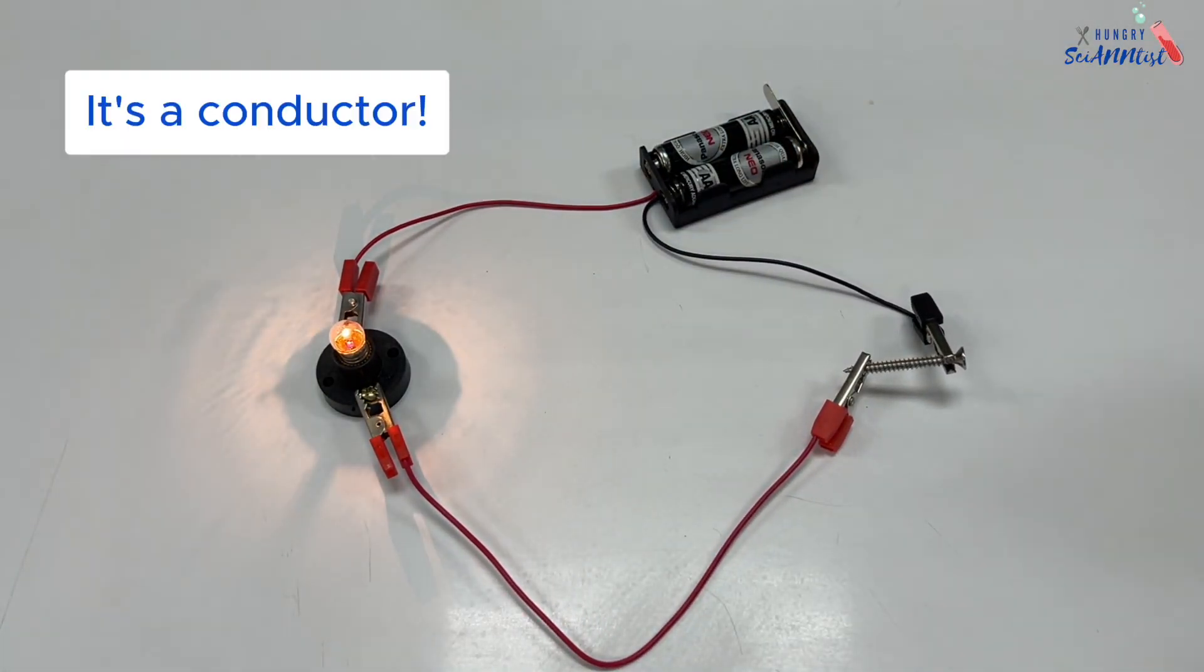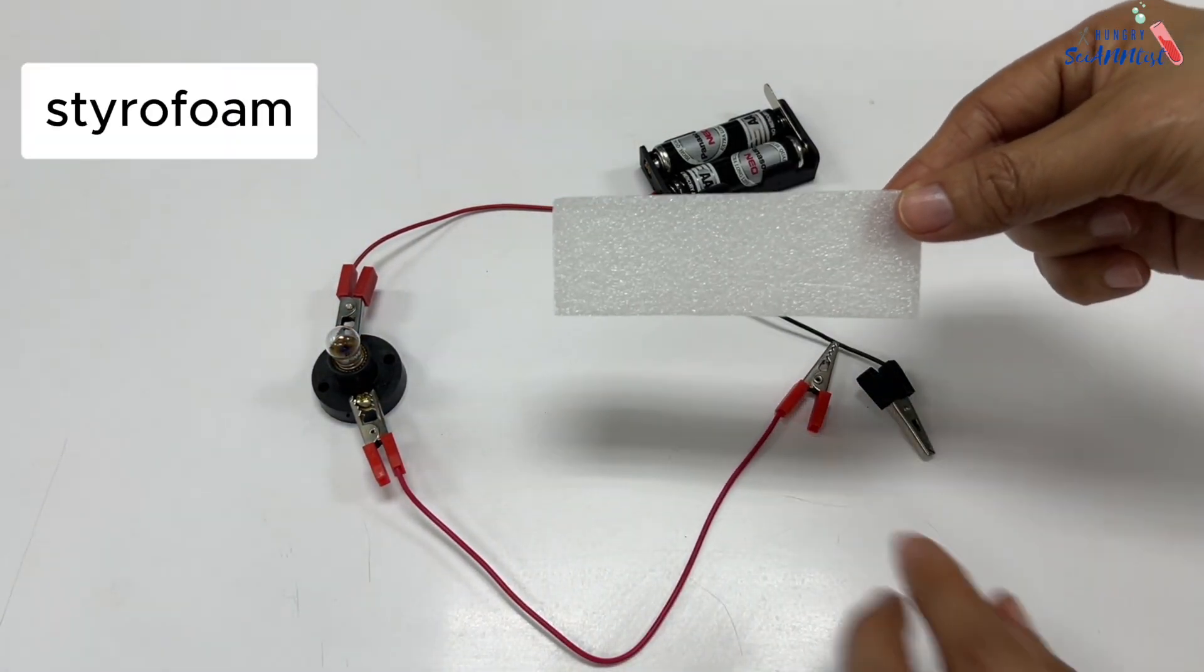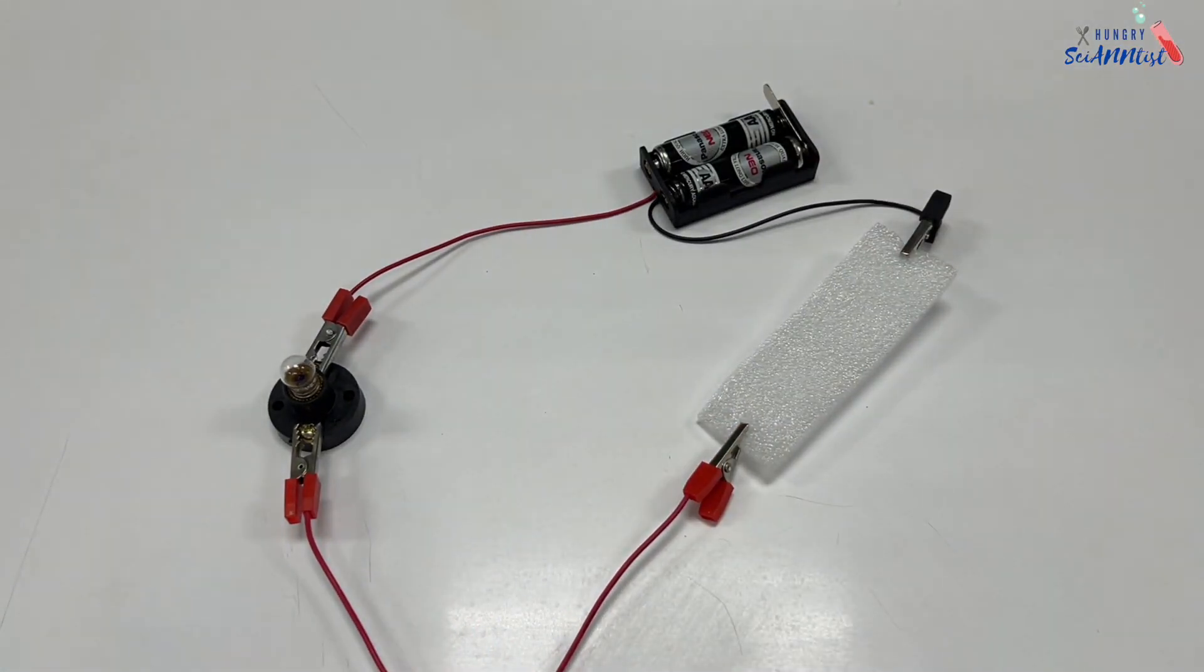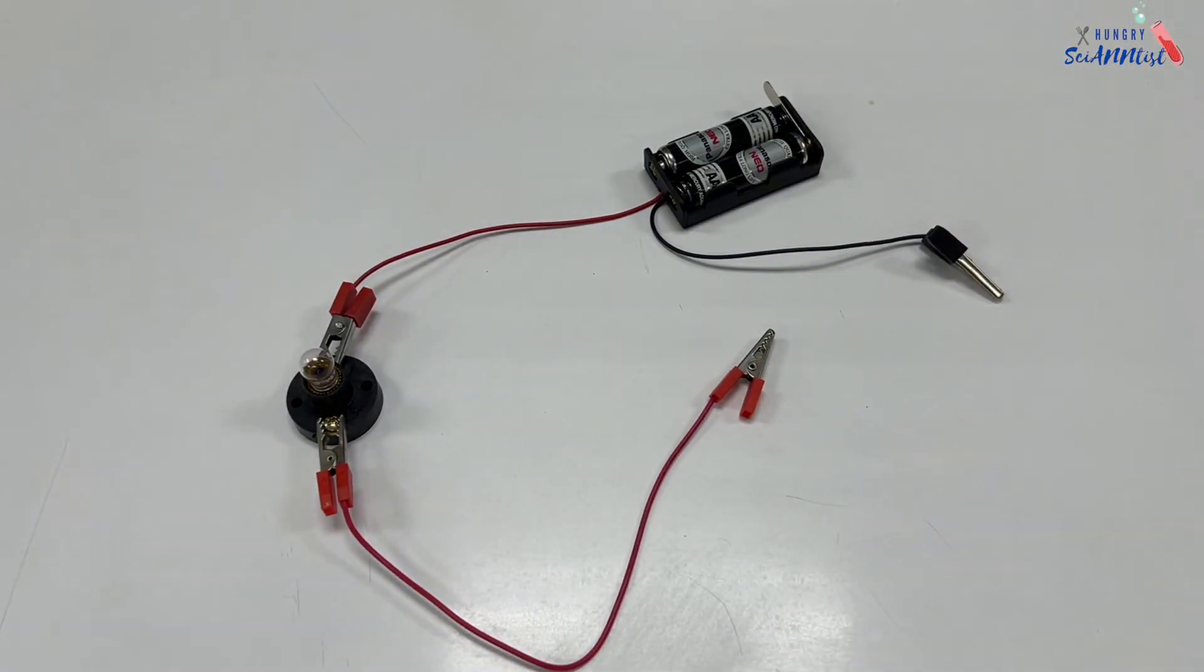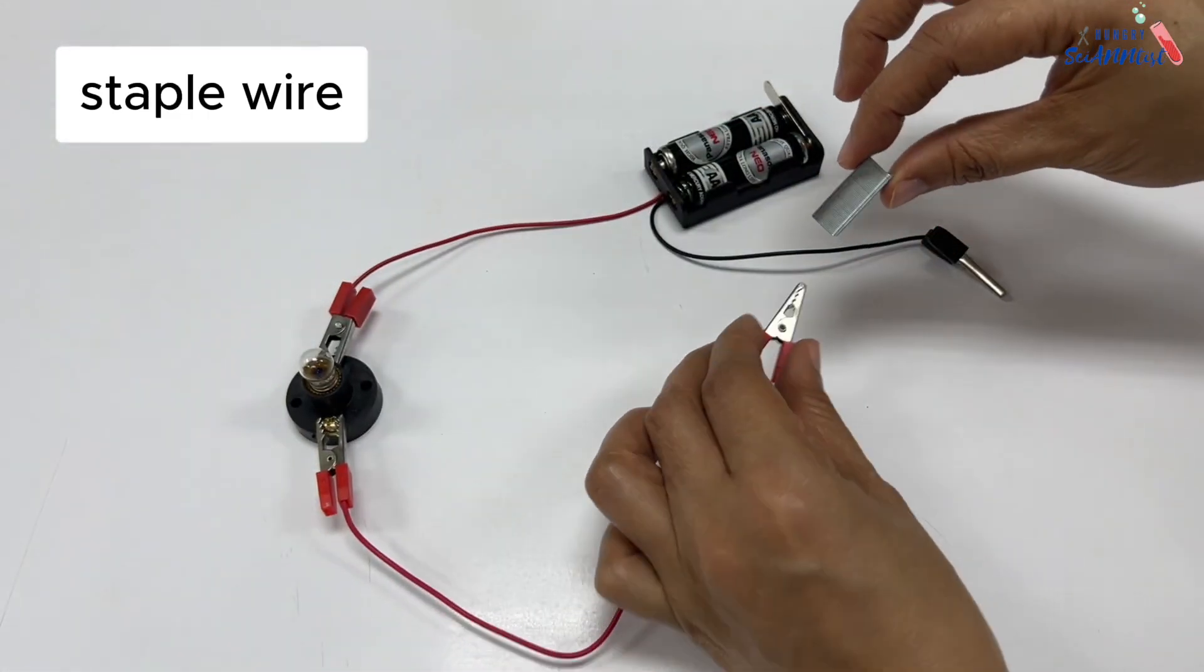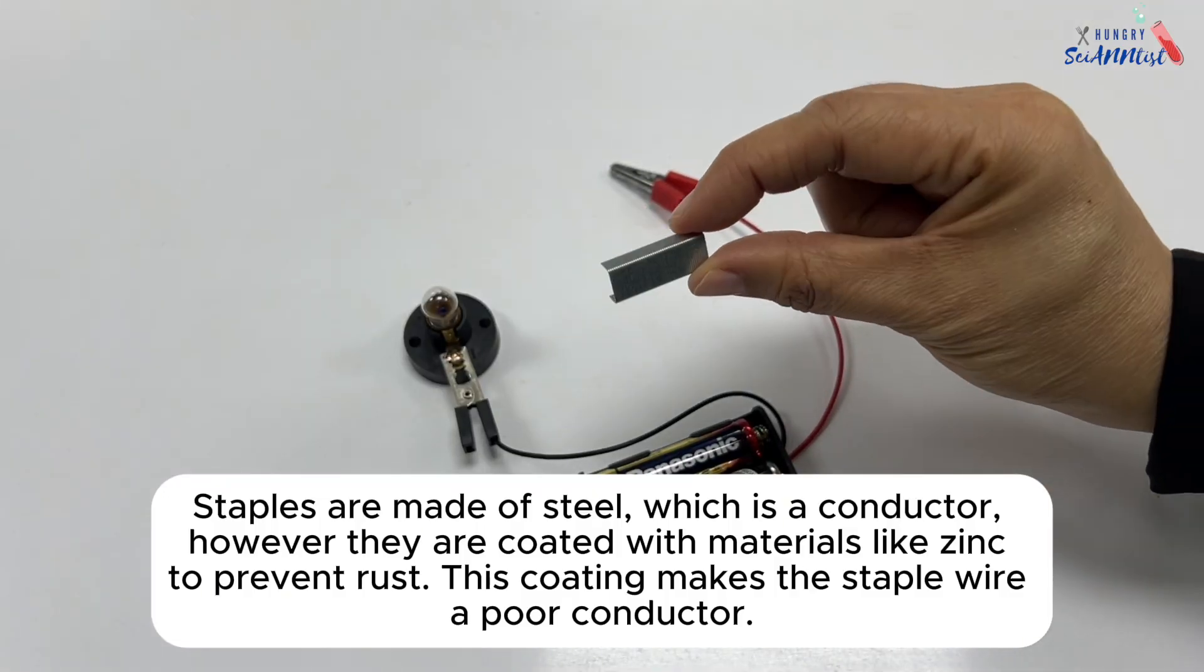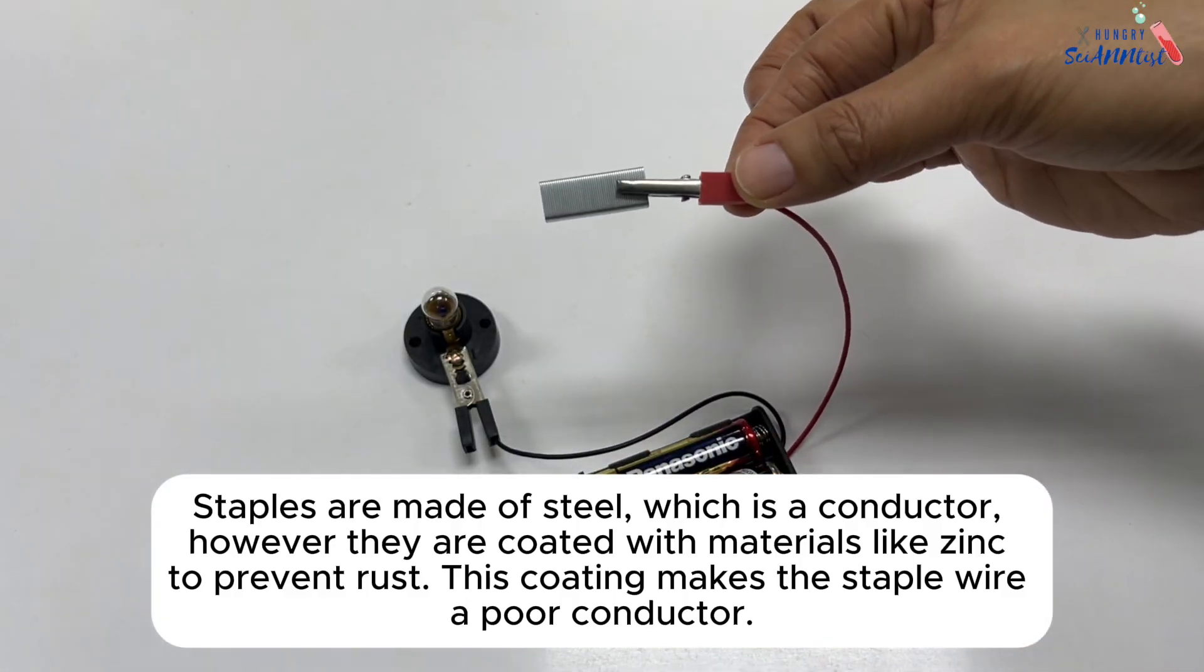A screw is a conductor. Staple wire pins are made of steel, which is a conductor.